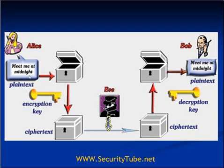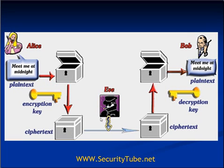Showing it with an analogy: Alice puts the 'meet me at midnight' plain text message in a box, locks that box with the encryption key, and sends it over a publicly shared medium to Bob. There is an eavesdropper Eve sitting on that shared medium. Eve can capture all packets sent between Alice and Bob, but since the box is locked with the encryption key and only Alice and Bob know the key, Eve cannot open the box or read the messages. Thus symmetric key cryptography is secure from the outside world.